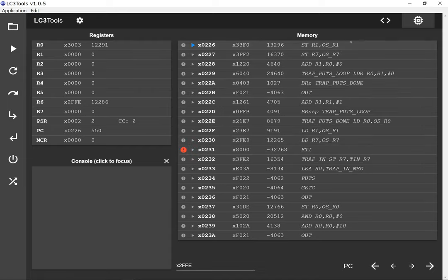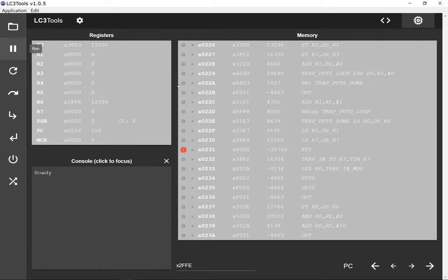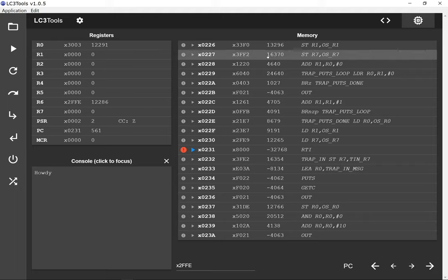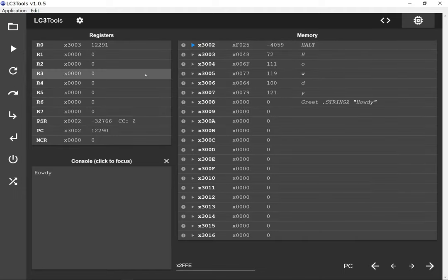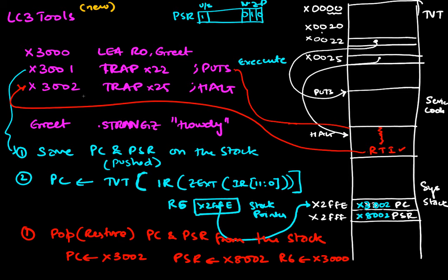Going to x2FFE we can see the PC value x3002 and PSR value x8002 have been pushed on the stack. I'll put a breakpoint at the RTI, run through the service code, then step over the RTI. The act of returning pops those two things off the stack and I find myself back at x3002. The stack pointer itself is stored in a saved stack pointer location, and R6 goes back to its old value — which was zero — so it returns to zero.